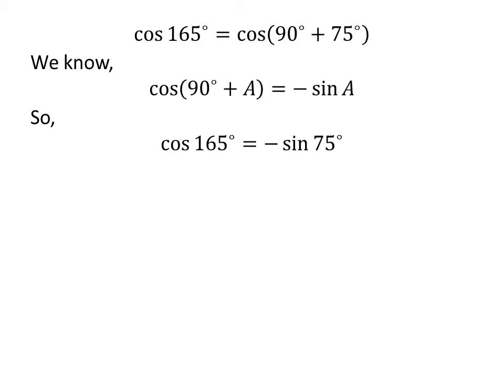So cosine of 165 degrees is equal to minus sine of 75 degrees. Again, 75 degrees is equal to 30 degrees plus 45 degrees, so cosine of 165 degrees is equal to minus sine of 30 degrees plus 45 degrees.